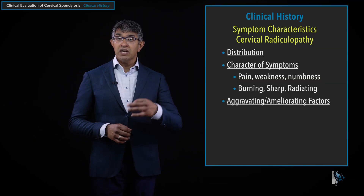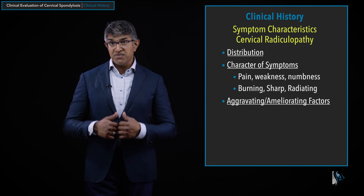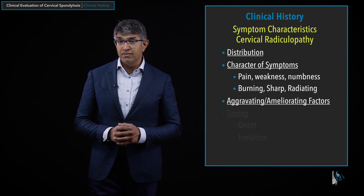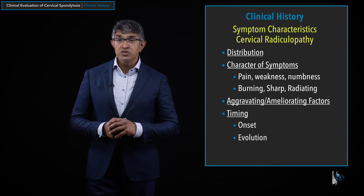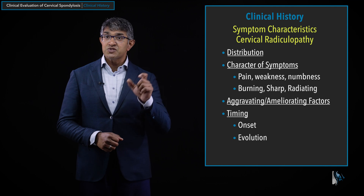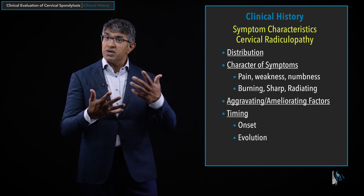Then we talk about aggravating and ameliorating factors: are there specific positions, activities, or maneuvers that make people better or worse? That can lend insight into whether symptoms are truly coming from the cervical spine. We also discuss timing — how the symptoms started and evolved. Did it start bad and slowly improve, suggesting we wait? Has it been building and getting worse? The timing and cadence can have implications for decision making around management.